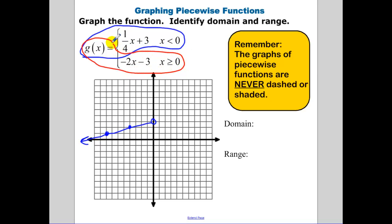The bottom function is negative 2x minus 3 for x greater than or equal to 0. I go to negative 3 because that's the y-intercept and plot out the slope. There's a filled-in hole at negative 3, and I go down 2 and right 1 for the slope.